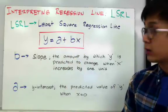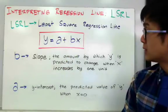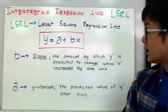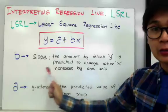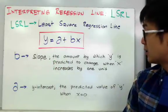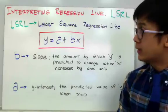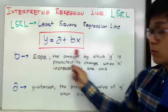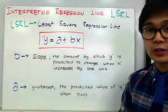In this particular linear model, b is our slope, which means the amount by which y is predicted to change when x increases by one unit. And a, which is our y-intercept, is basically the predicted value of y when x is equal to zero. In this particular lesson, we're going to use this linear model in predicting an outcome given an x for the value of y.